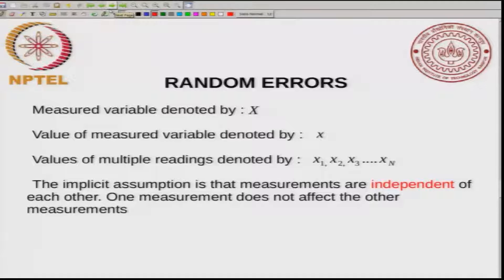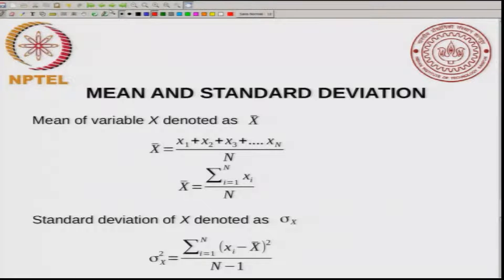To summarize: systematic errors tend to shift data in one direction and should be minimized or avoided. Random errors have no specific direction of change, can be quantified using statistics, and will be the focus of this lecture. Gross errors lead to outliers that should be discarded. Coming to random errors — suppose you are measuring a variable denoted by X. X might represent the volume of the titrant. If you make multiple readings you see different values: x₁, x₂, x₃, up to xₙ. The implicit assumption is that the different measurements are independent of each other.